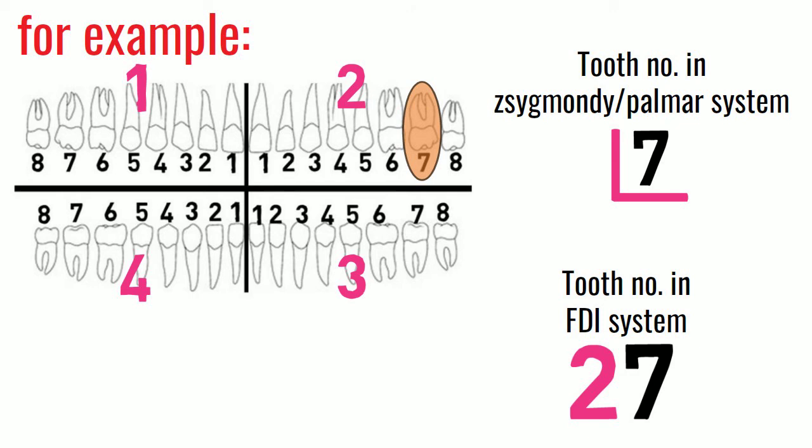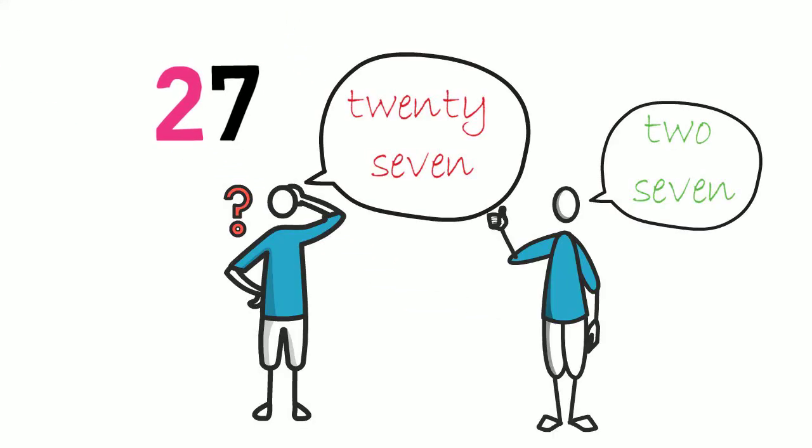Since the two digits denote different details of the tooth, while communicating verbally, both the digits always are spoken separately.